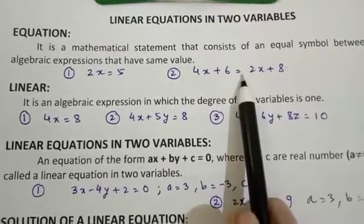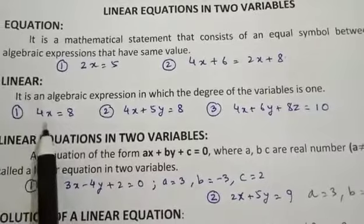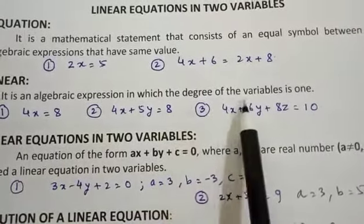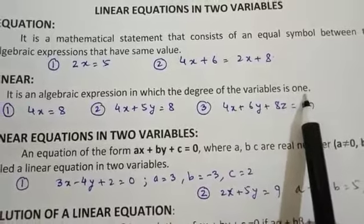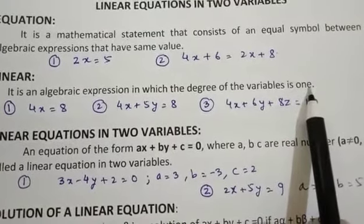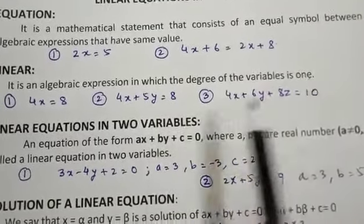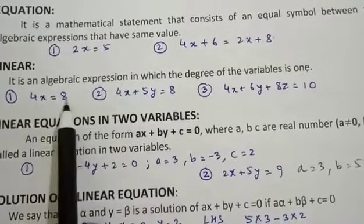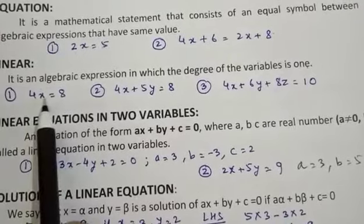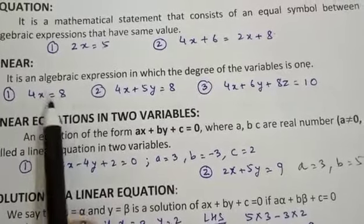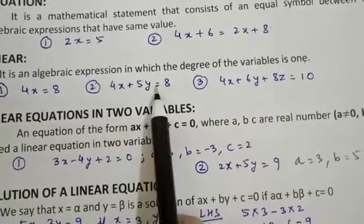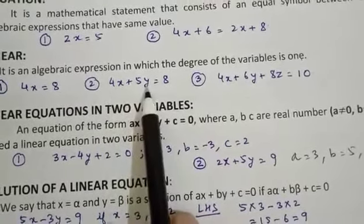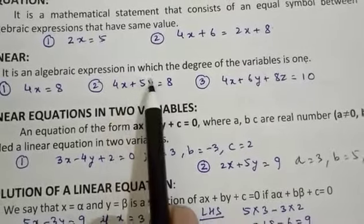Now moving towards the next word, that is Linear. It is an algebraic expression in which the degree of the variables is 1. Degree means the highest power. So if you look at the first equation, it is 4x equal to 8 — the variable is x with the power of 1. The second equation is 4x plus 5y equal to 8; there are two variables x and y, both have the degree of 1.